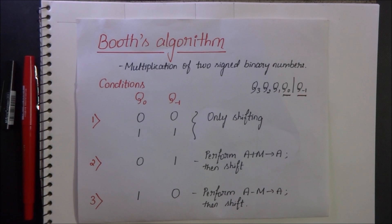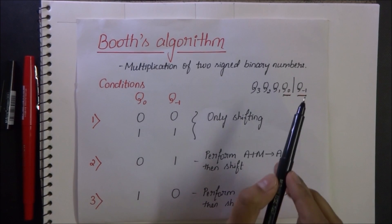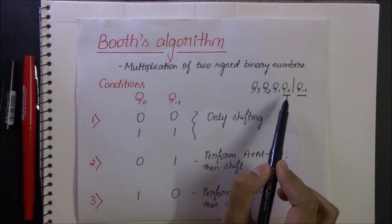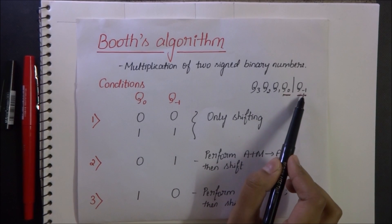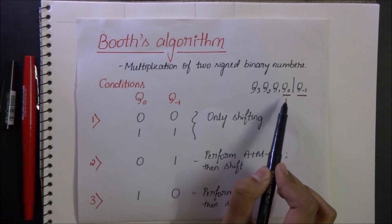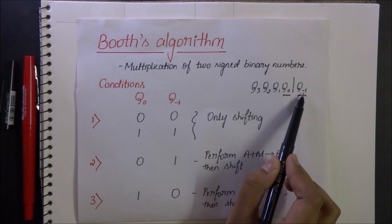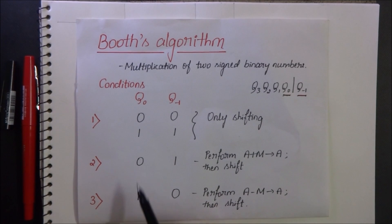Consider a 4-bit binary number Q. Its end bit becomes Q0 and the bit previous to it is Q-1. Considering various values of Q0 and Q-1, we have these cases under the conditions.